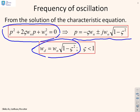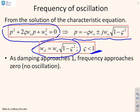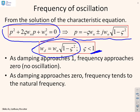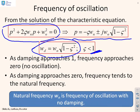To have oscillation, we're assuming that damping is less than 1. As damping approaches 1, the frequency ωd approaches 0 because √(1 − ζ²) becomes small. As the damping ratio approaches 0, this frequency tends to the natural frequency. The natural frequency ωn is the frequency of oscillation you would get if there was no damping at all.